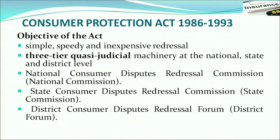There is an act referred to as COPA, which stands for the Consumer Protection Act 1986. Its objective is the simple, speedy, and inexpensive redressal of consumer grievances. There is a three-tier judicial system appointed for this redressal at the national, state, and district levels. Depending upon the quantum of money involved in disputes, they are handled at various levels: the National Consumer Disputes Redressal Commission, State Consumer Disputes Redressal Commission, and District Consumer Disputes Redressal Forum.